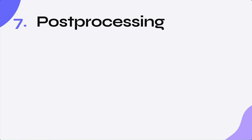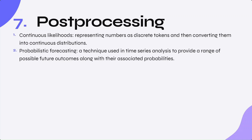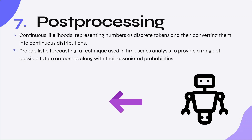The last step is post-processing. This involves analyzing the outputs generated by the transformer model. Modeling continuous likelihoods involves representing numbers as discrete tokens and then converting them into continuous distributions. This is achieved by dividing the range of numbers into bins and assigning a uniform distribution to each bin. Each data point is then assigned a probability based on the bin it falls into. Probabilistic forecasting takes into account the uncertainty inherent in predicting future values, unlike deterministic forecasting which provides a single point estimate. This step is done outside of the transformer.